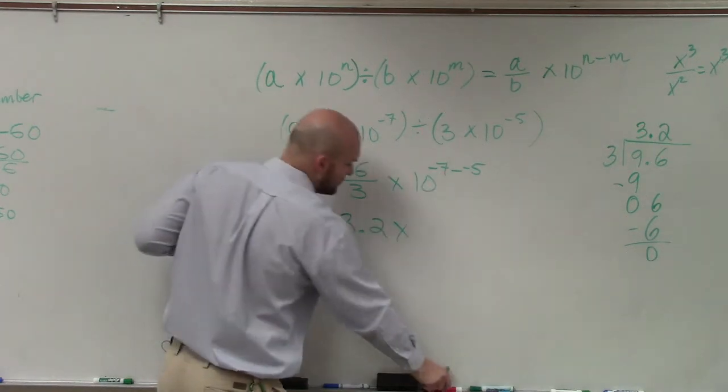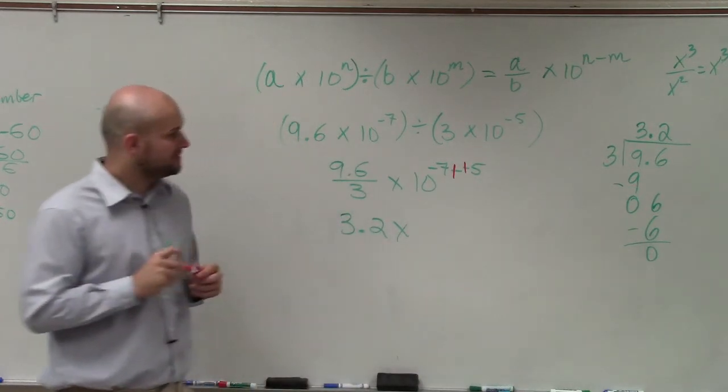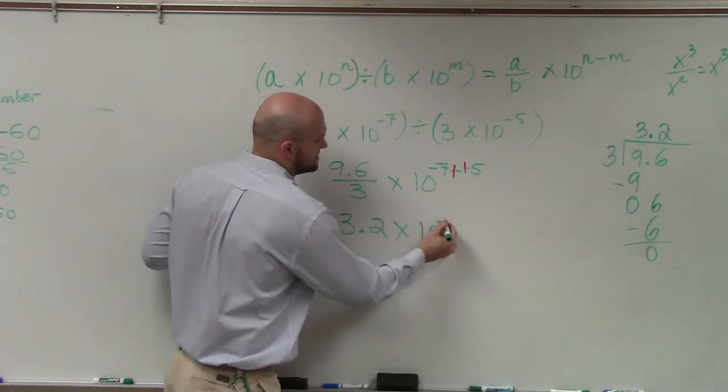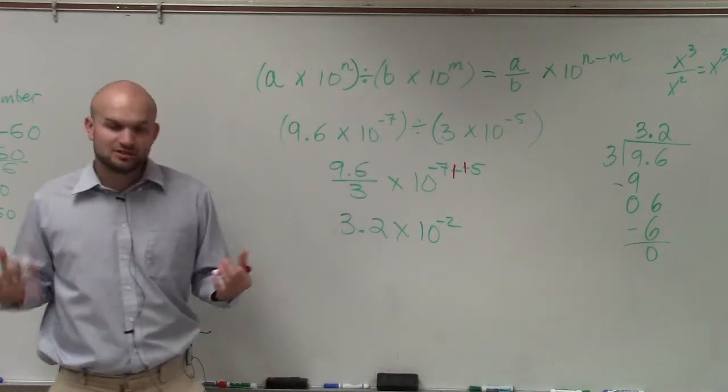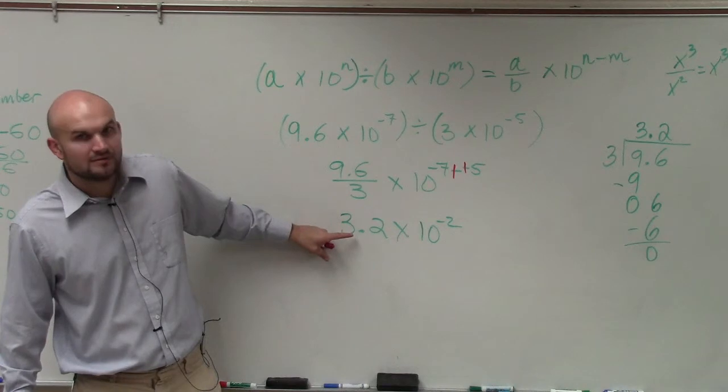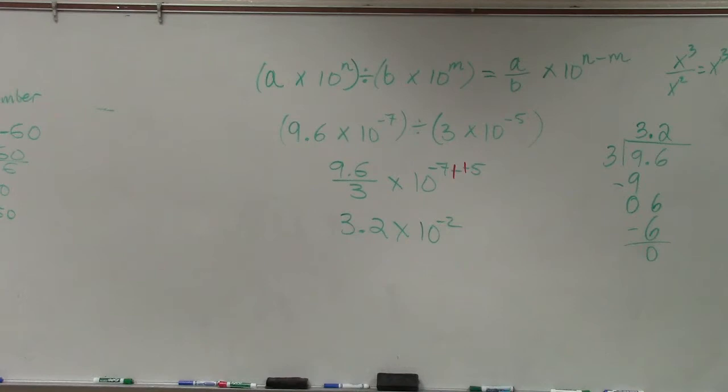Remember, ladies and gentlemen, when you have a minus a negative, we can call that a double negative. So we have negative 7 plus 5, which is negative 2. So this is 3.2 times 10 to the negative 2. I always go back and check: is my whole number between 1 and 10? Yes? Then I'm good to go. I don't have to do anything else.